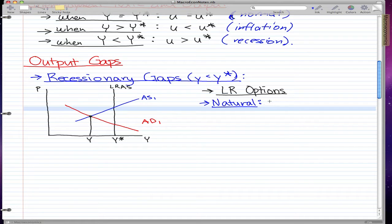So the long run options - we know right away that there's a natural long run option to fix this, and it is by doing nothing. By doing nothing, our factor prices fall, our aggregate supply moves right, AS right, from AS1 to AS2.